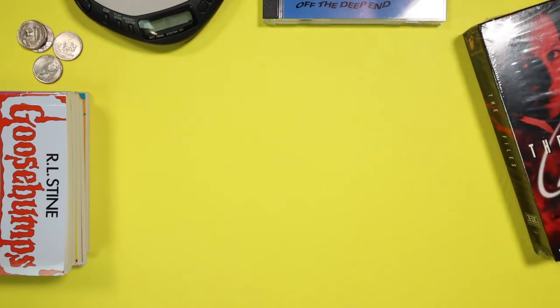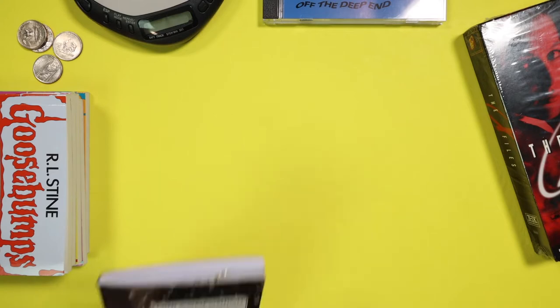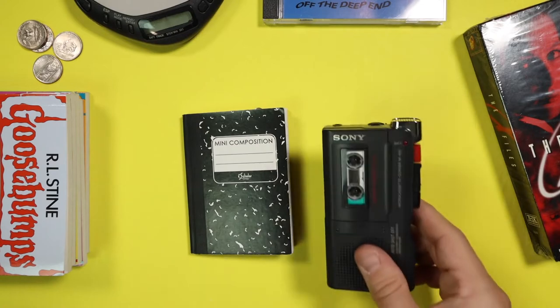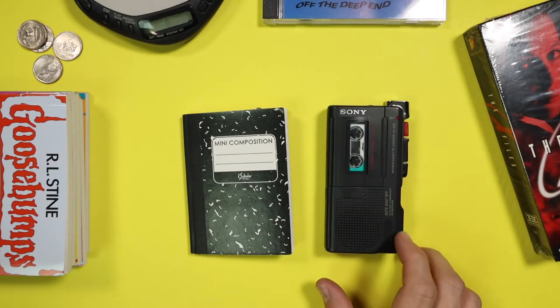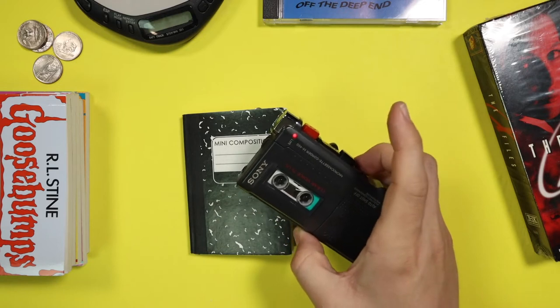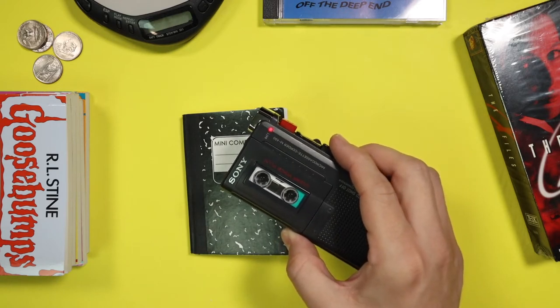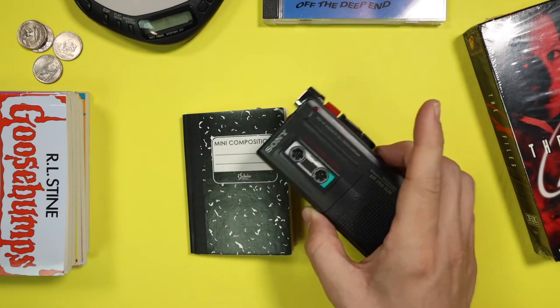And the last feature that we need to replace on the cell phone is note taking. So we are going to carry a pocket notebook to take written notes and a microcassette recorder to take voice memos like this. Help, I'm stuck in the 1990s and I can't get out. Help, help. That was weird.